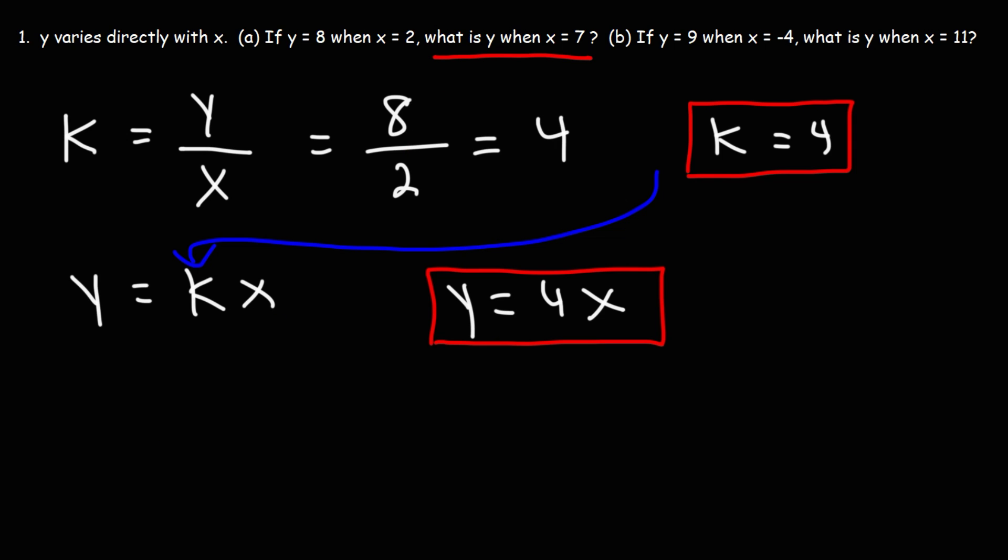What is Y when X is 7? So now we need to plug in X. We're going to replace X with 7. So this is going to be 4 times 7 equals 28. So that's the answer for part A. That is the value of Y when X is 7.